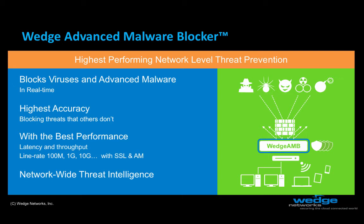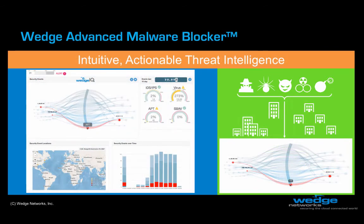Pretty cool. And last but certainly not least, Wedge AMB rolls up the threat event data from all AMB systems across the extended enterprise to provide network-wide threat intelligence. Each Wedge Advanced Malware Blocker system includes an onboard virtualized Wedge IQ threat analytics engine. These engines consolidate the event data from all AMB systems across the enterprise to provide a real-time, network-wide view of the threat landscape.